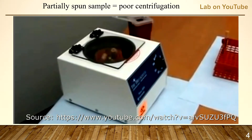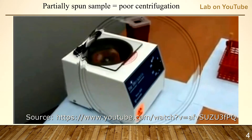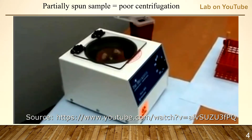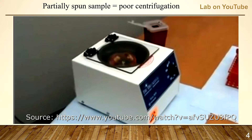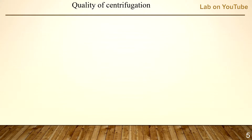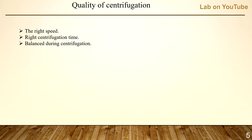Partial spin sample error results mainly from poor quality of centrifugation. You may ask: what are the right conditions to obtain good quality centrifugation? Quality of centrifugation depends on several factors: the right speed, plus the right centrifugation time, plus balance during centrifugation.